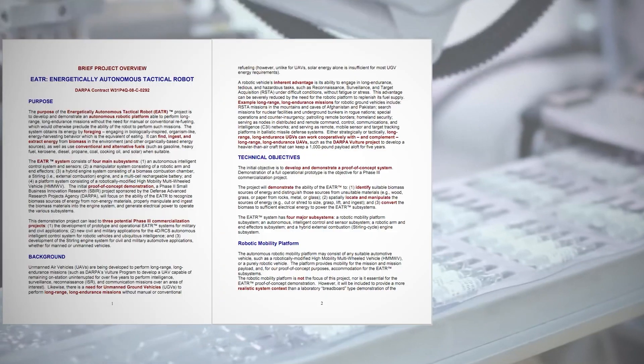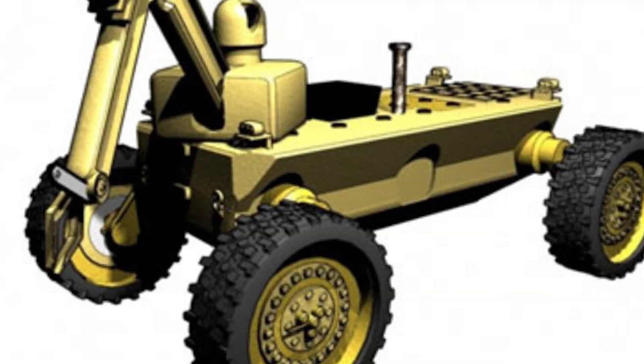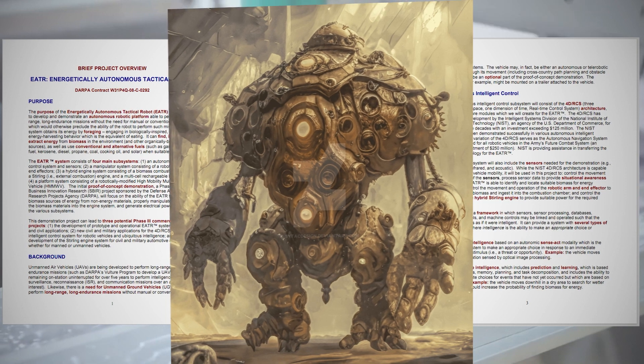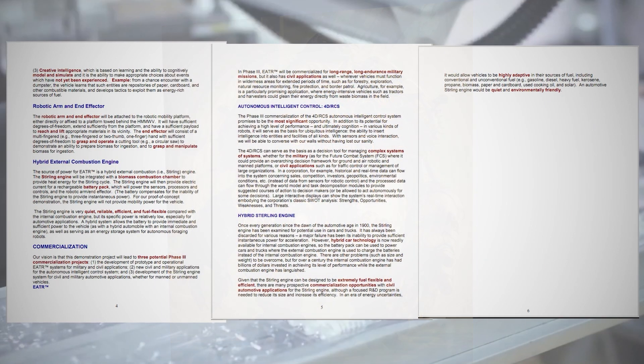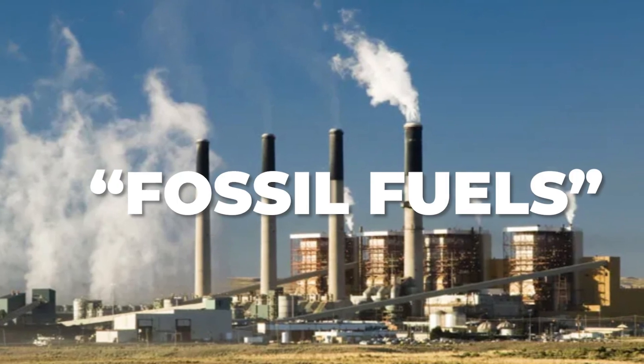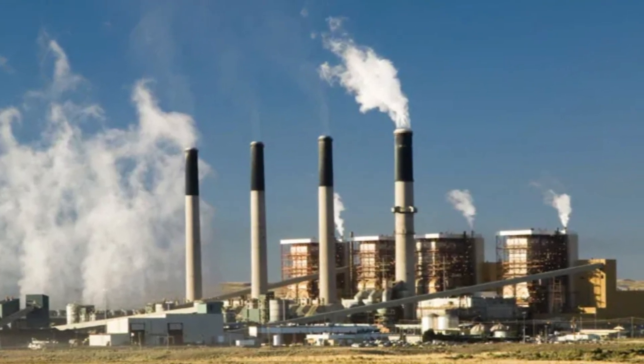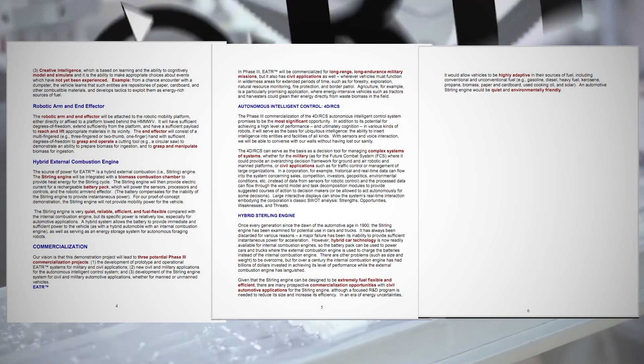According to the paper, the system obtains its energy by foraging, engaging in biologically inspired organism-like energy harvesting behavior, which is the equivalent of eating. It can find, ingest, and extract energy from biomass in the environment, and other organically based energy sources, as well as use conventional and alternative fuels, such as gasoline, heavy fuel, kerosene, diesel, propane, coal, cooking oil, and solar when suitable.